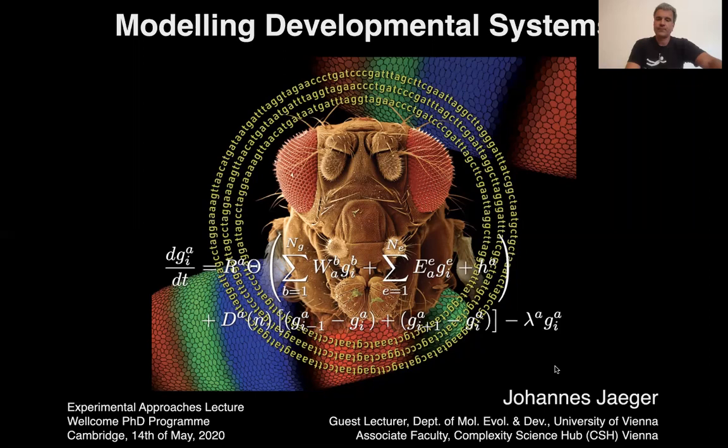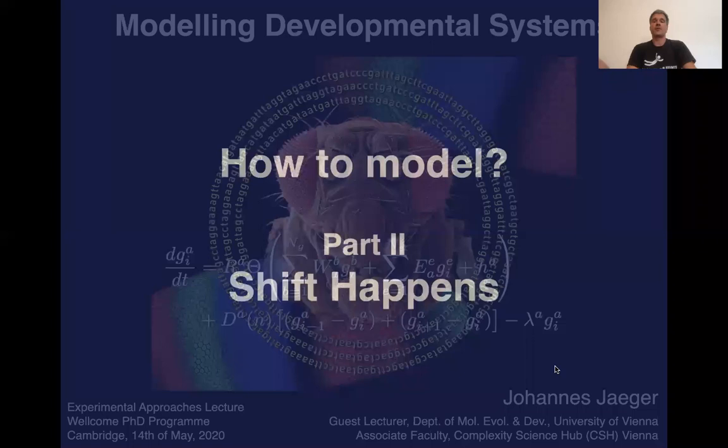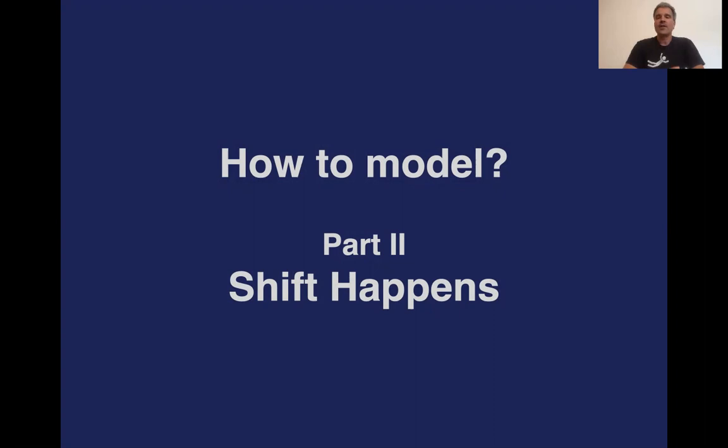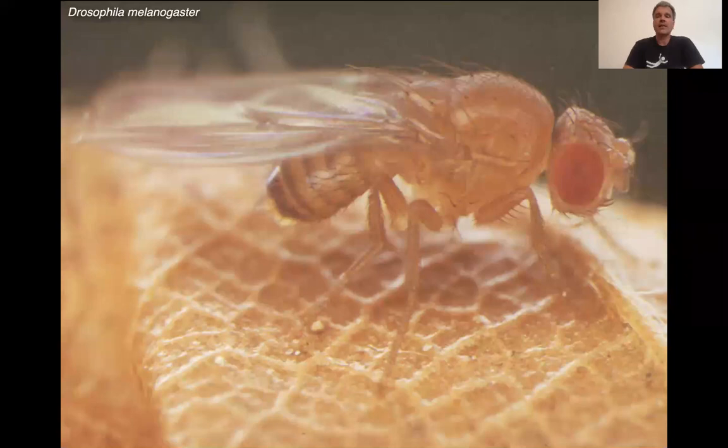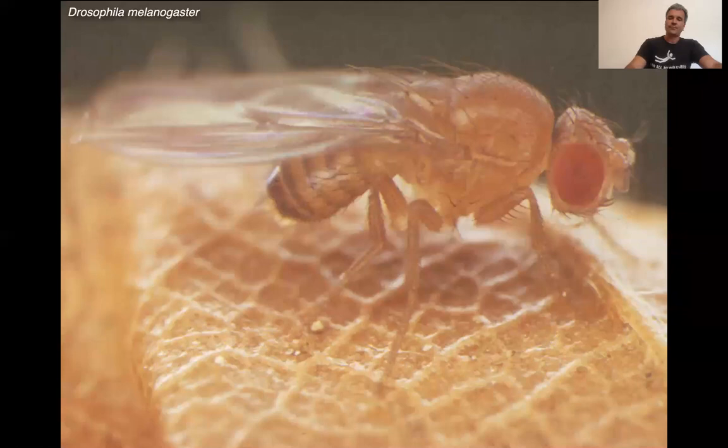In this lecture I want to introduce one of my favorite systems because it's based on my own work on the function and evolution of segmentation genes, especially the gap gene system in different species. So we're going to move back to insects and start this lecture just like the first one with the vinegar fly Drosophila melanogaster, the classic genetic model system.